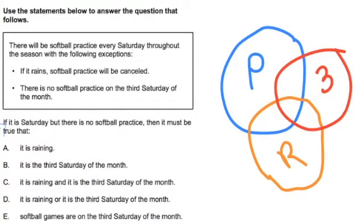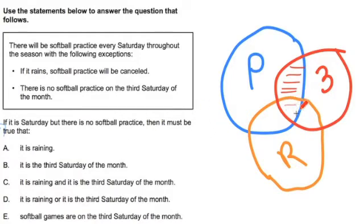Now, what does this mean? Well, this means a couple of things. It means that on these days, when it's the third Saturday, there's no practice. And it also means that sometimes it's raining and there's no practice. So when it's raining, there's no practice — and sometimes it rains and it's the third Saturday, and there's no practice.